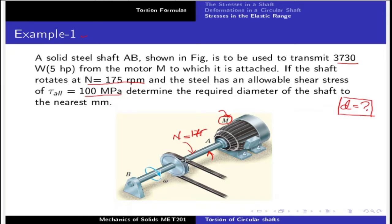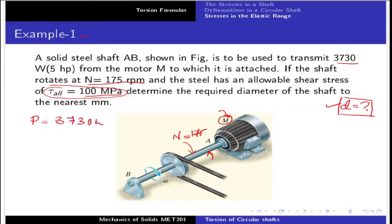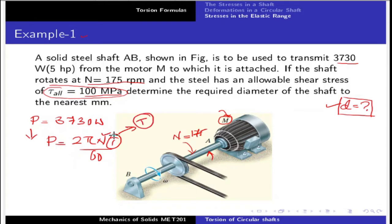In torsion, the power is transmitted through the shaft AB. To calculate the diameter, we first use the power equation: Power = 2πNT/60, where N is the RPM and T is the torque. Power is equal to 3730 Watt, so from this equation you can calculate the torque T.